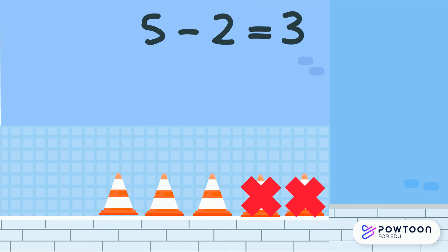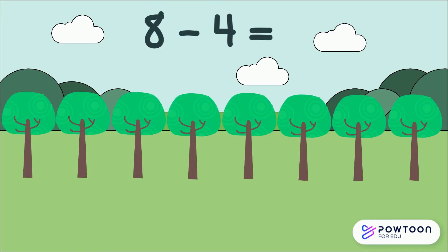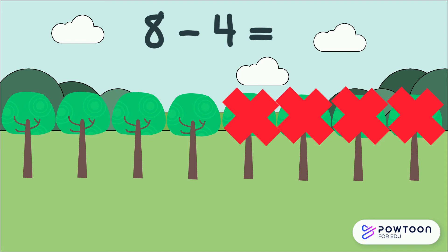Let's have another go. Eight take away four. So we have eight trees and we need to take four away. Let's cross out four. One, two, three, four. Great work. Let's see how many we have left over. One, two, three, four. So we have four trees. Eight take away four equals four.